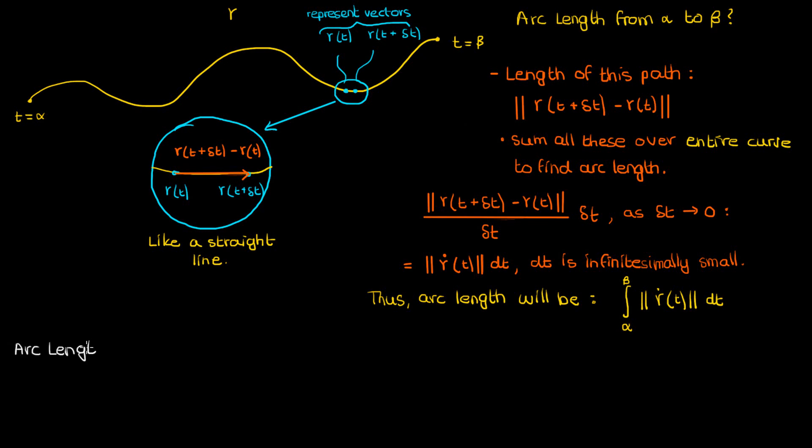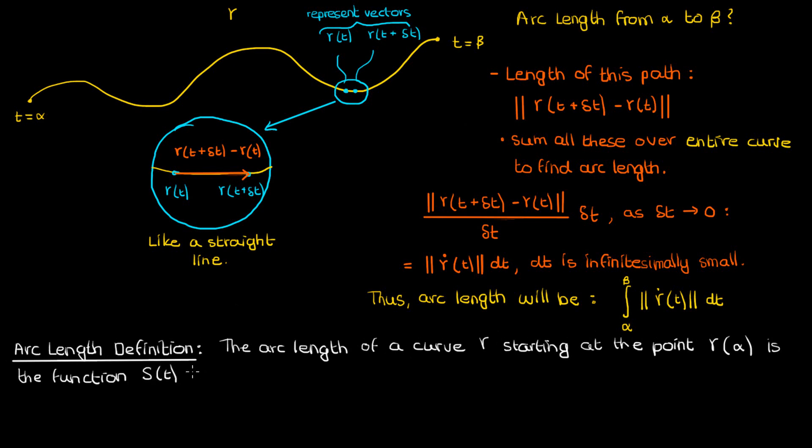And this discussion brings us to the definition of arc length. The arc length of a curve γ, starting at the point γ(α), is the function s(t) given by s(t) equals the integral from α to t of the magnitude of γ̇(u) du.